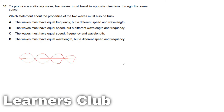Going through the choices: Option A — the waves must have equal frequency, which is correct, but different speed and wavelength — this part is wrong, so A is not the answer. Option B — equal speed, which is correct, but different wavelength and frequency — that's wrong. Option C — equal speed, equal frequency and wavelength — which is right. Option D — equal wavelength but different speed and frequency — that's wrong. So the answer is C.